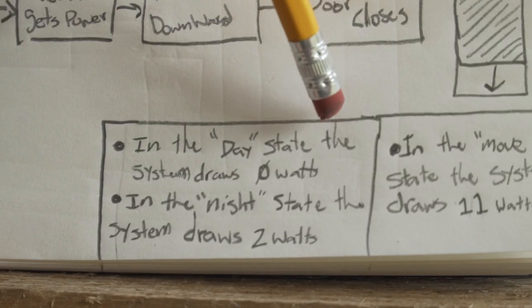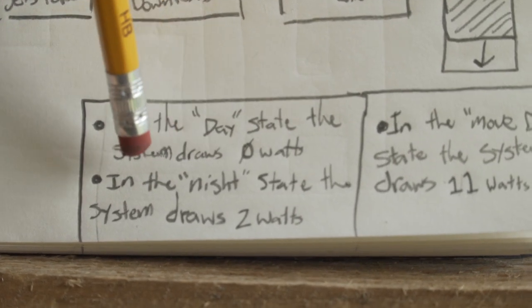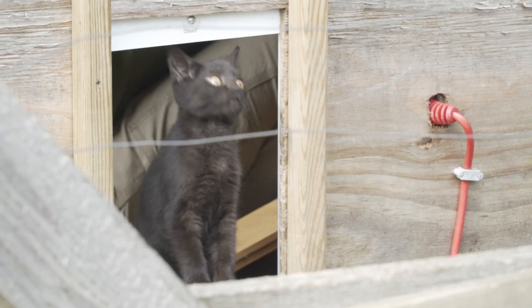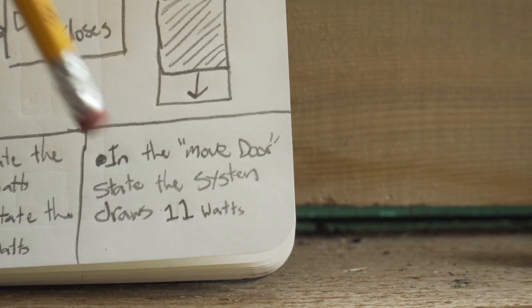During the day, the system draws 0 watts, but at night, since the relay is activated, it draws 2 watts. During the transition time when the door is opening or closing, the motor system draws 11 watts.